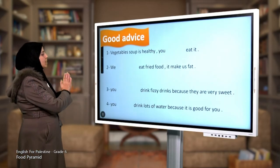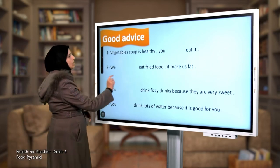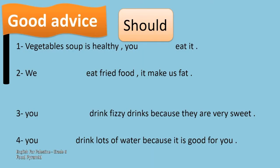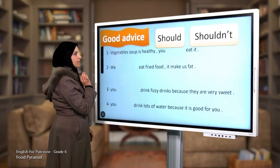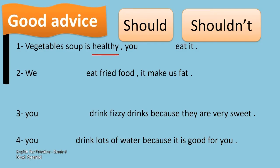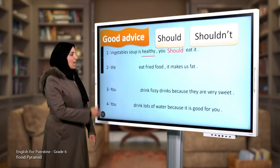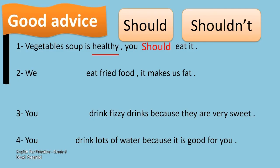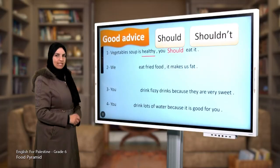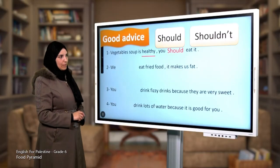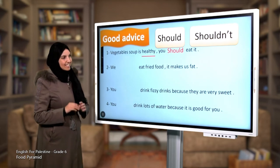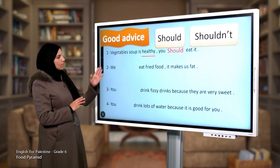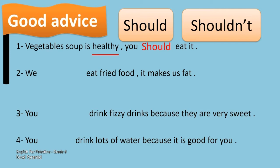We are going to give advice using 'should' and 'shouldn't.' Look at sentence number one: vegetable soup is healthy, so we should eat it. Number two: fried food makes us fat. Do you want to be fat? No! So we shouldn't eat fried food because it makes us fat.